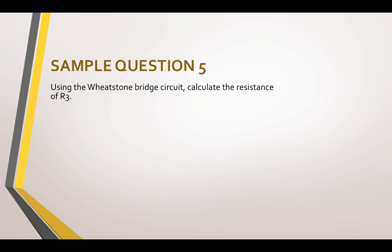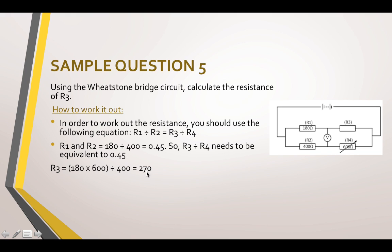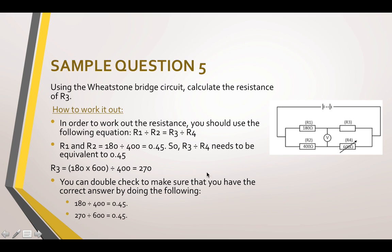Sample question five. Using the Wheatstone bridge circuit, calculate the resistance of R3. So here we've got your circuit. In order to work out the resistance, you should use the following equation. R1 divided by R2 equals R3 divided by R4. So R1 divided by R2, so 180 divided by 400 is 0.45. So R3 divided by R4 needs to be equivalent to 0.45. So R3 equals 180, which is R1, times the 600, which is the value of R4, and then divide that by R2, which is 400, to give you 270. So if you factor that into the equation, 270 divided by the 600 will give you 0.45. So both of these are now equal.